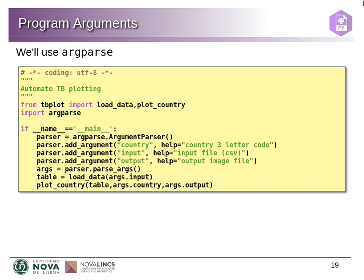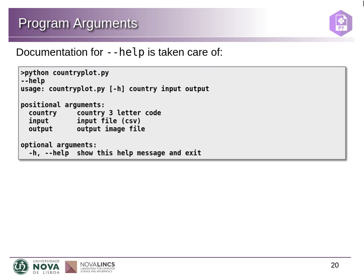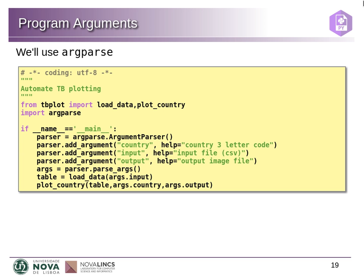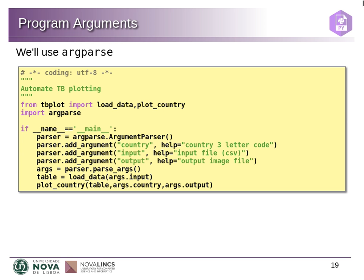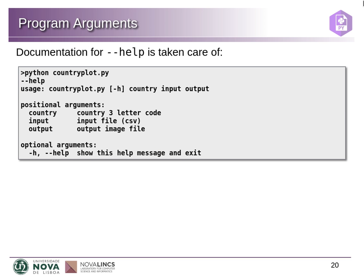We get the parser object from the library and specify what arguments we want — positional arguments called 'country', 'input', and 'output' — and we can add help strings. When someone uses our script from the command line, if they run it without the required arguments, the arg-parser will terminate execution and output indications of which arguments it's expecting, showing the help strings we defined.